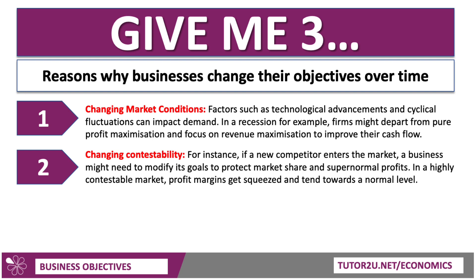A second reason is changing contestability. For example, if a new competitor, a new brand, a new product enters the market, a business might need to modify their objectives and goals to protect their market share and protect supernormal profits. What we tend to find is that in a highly contestable market, with both actual and the threat of competition, businesses move away from pure profit maximization. Indeed, profit margins get squeezed and tend towards the normal level.